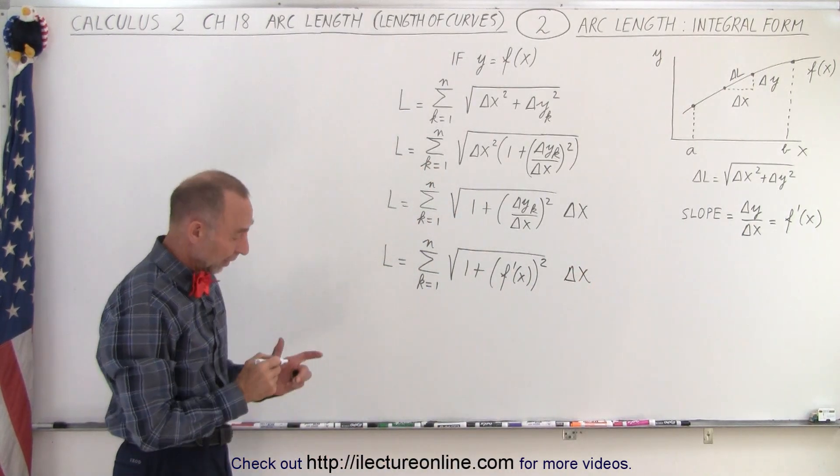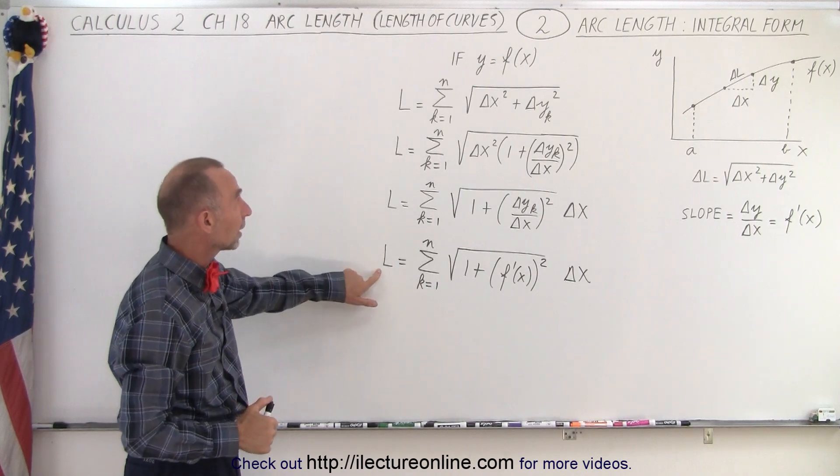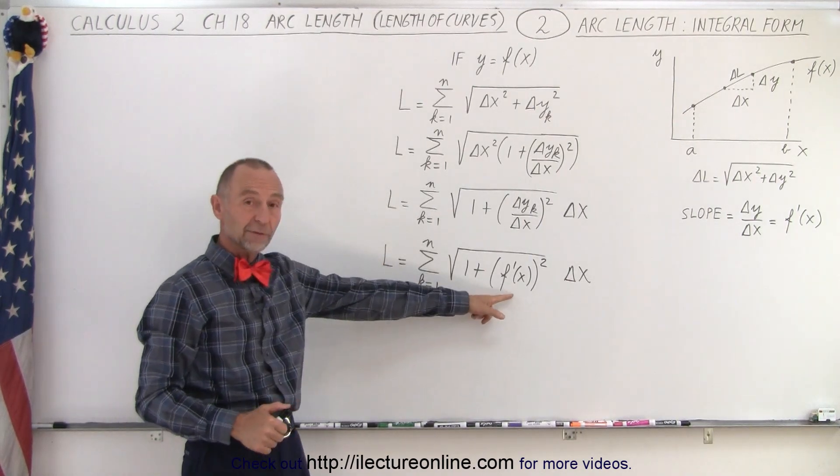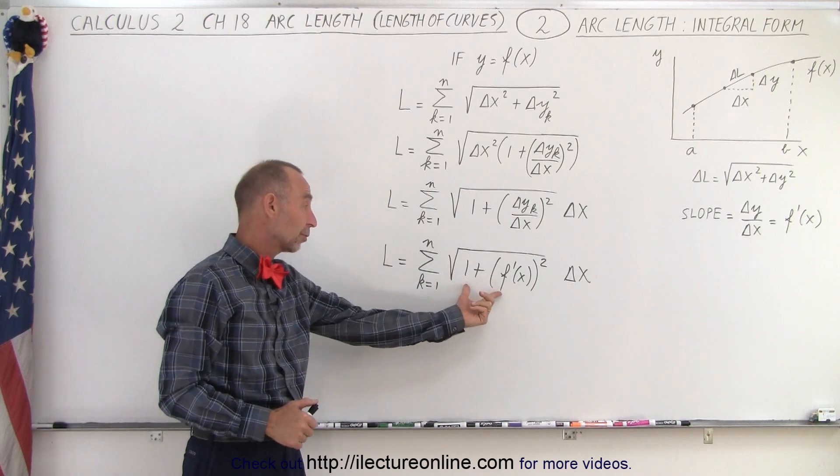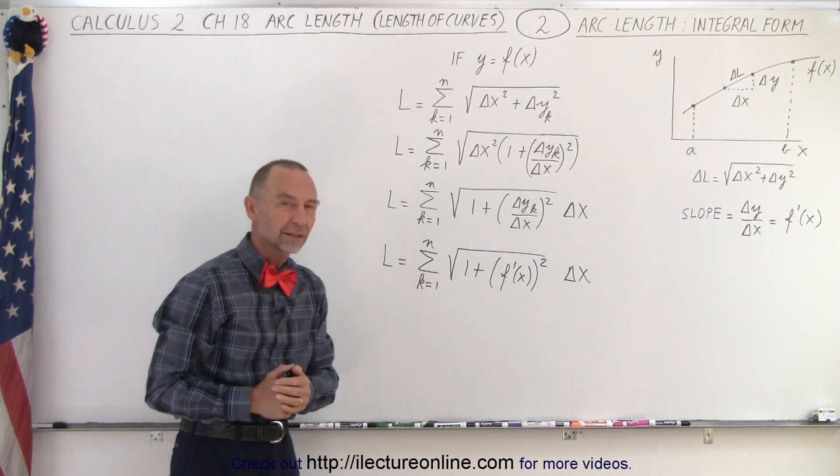So now we see where we're going with this, because if we're going to find the arc length of a function, all we need to do is take the derivative function, square it, put it inside the square root sign, and multiply times the delta x.